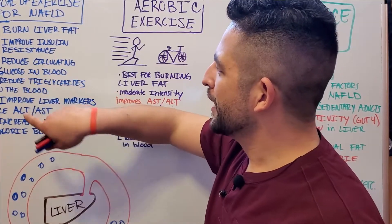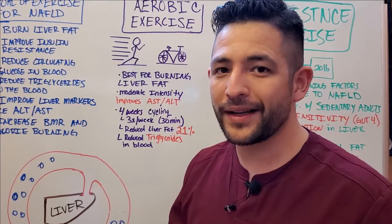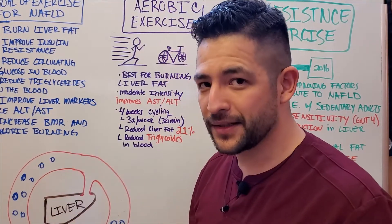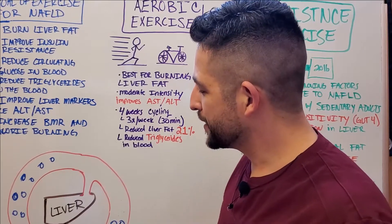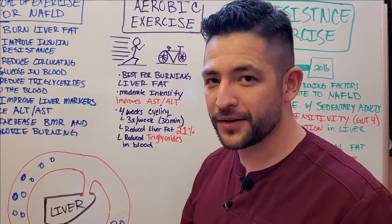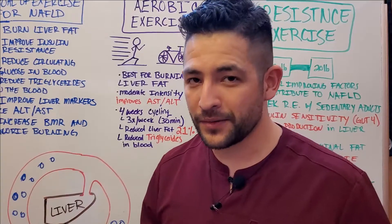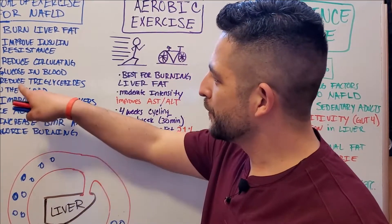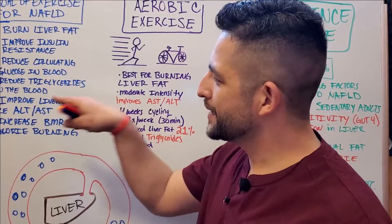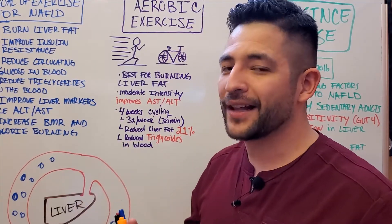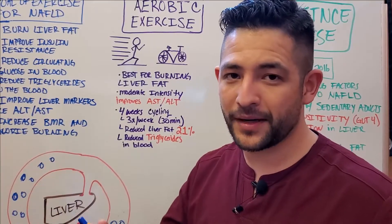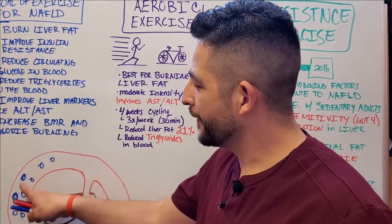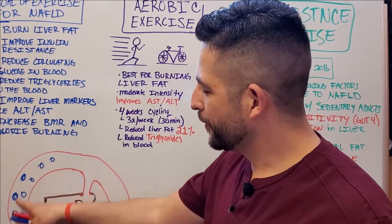Next, we want to be able to reduce the circulating glucose in our blood, which is a very common issue in fatty liver. When we have too much glucose floating around because of insulin resistance, over-consuming calories, and the liver producing new glucose from other substances — also known as gluconeogenesis — this is something our exercise strategy needs to address. We also want to reduce the triglycerides in the blood. Many people with this condition have elevated triglycerides on a blood test. Triglycerides is another word for fat floating around in the blood.